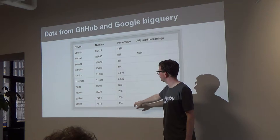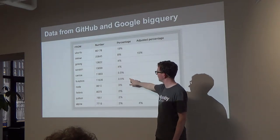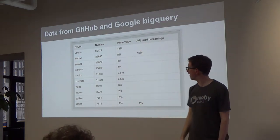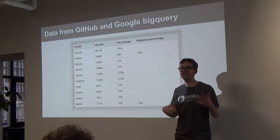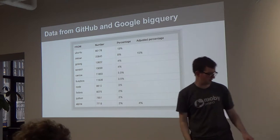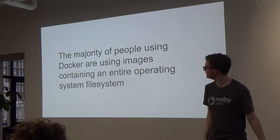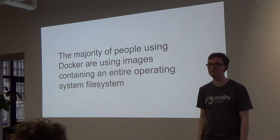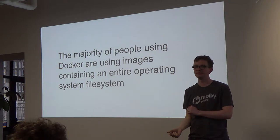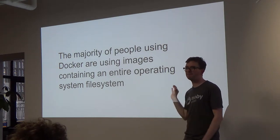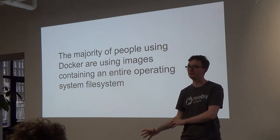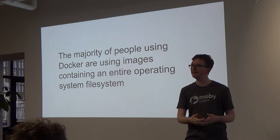You've got Fedora, a bit more Alpine and Busybox, and just this massive chunk of Debian derivatives, with a few people doing Scratch. Interestingly, you get those three data points painting pretty much the same picture, which gives me confidence to make broad statements like: the majority of people using Docker are using images containing an entire operating system file system. I don't think that's changing anywhere near as quickly as some people on the internet would lead you to believe.